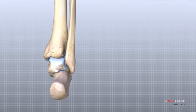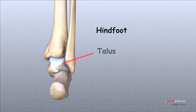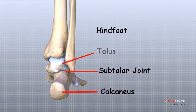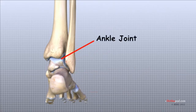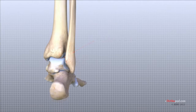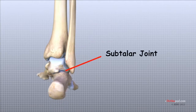The two bones that make up the back part of the foot, sometimes referred to as the hind foot, are the talus and the calcaneus, or heel bone. The talus is connected to the calcaneus at the subtalar joint. The ankle joint allows the foot to bend up and down, while the subtalar joint allows the foot to rock from side to side.